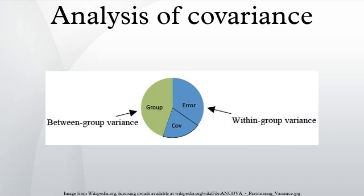The F-test is computed by dividing the explained variance between groups by the unexplained variance within the groups. Thus, F equals this ratio, and if this value is larger than a critical value, we conclude that there is a significant difference between groups.